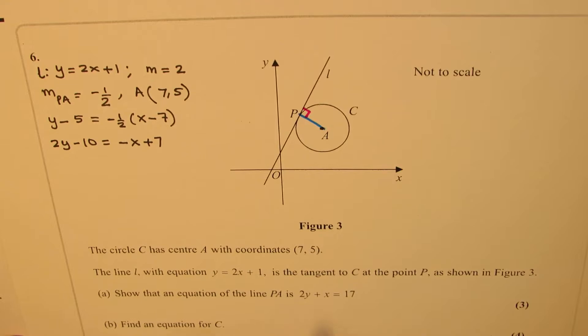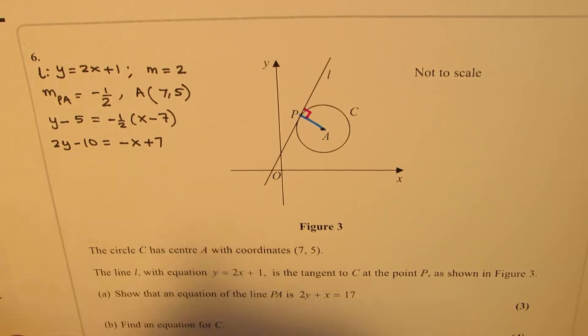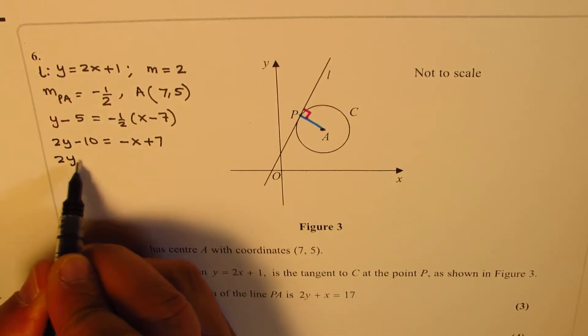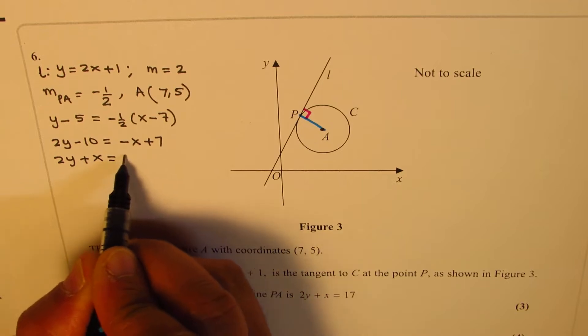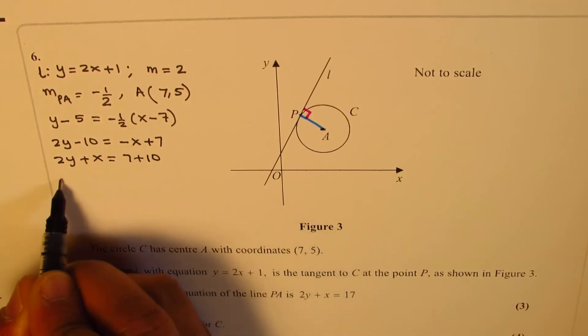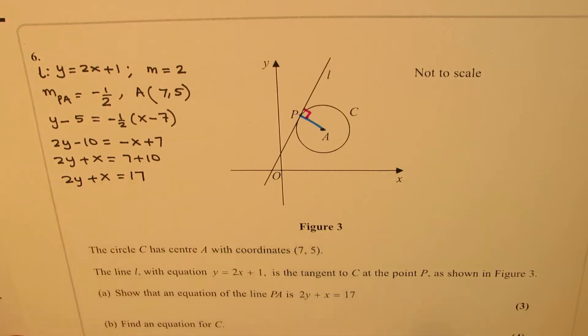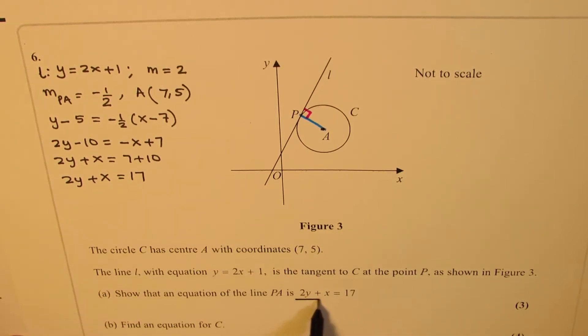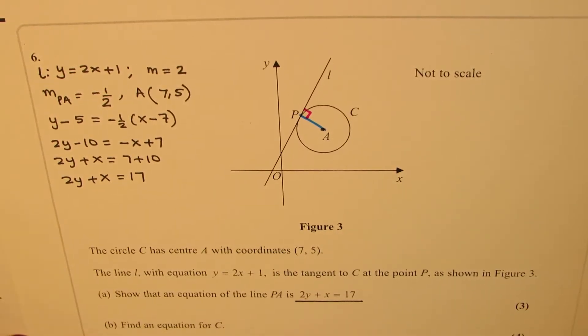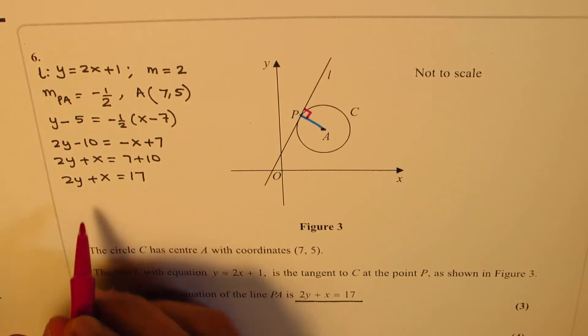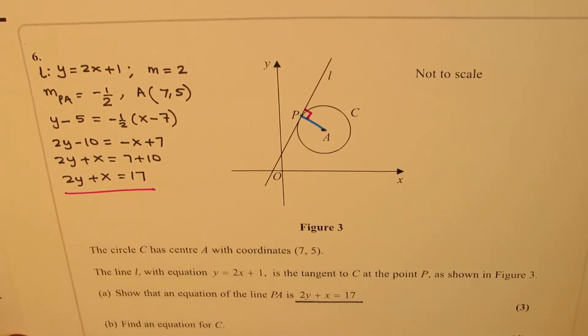Multiplying, we get 2(y - 5) = -(x - 7), or 2y - 10 = -x + 7. Bringing this together, we have 2y + x = 7 + 10, so 2y + x = 17. That is the equation of PA, which you were supposed to find. That's part A.